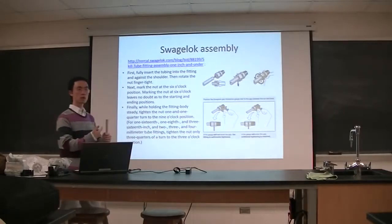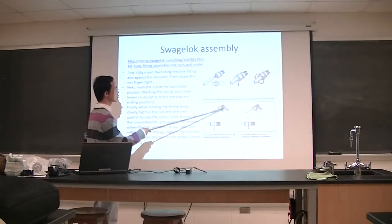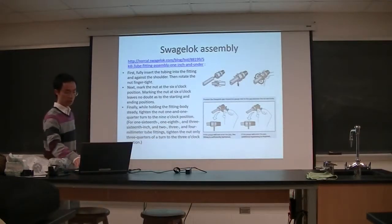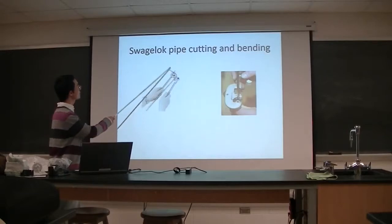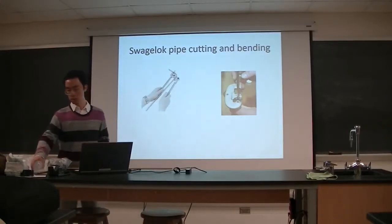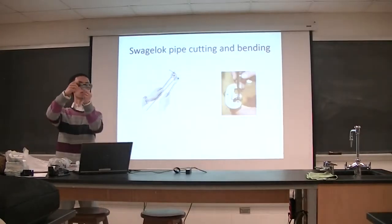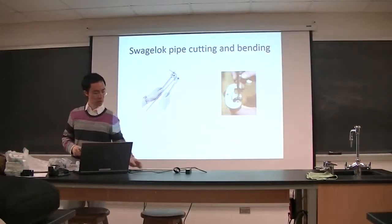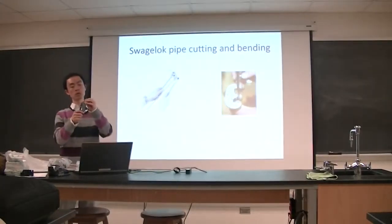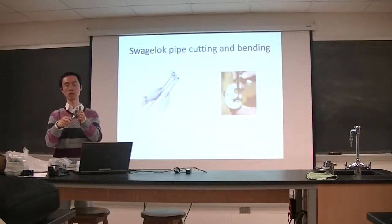You have special tools to bend and cut pipes. To cut: you have a rotating blade and a pressing part. Place your pipe in between, rotate it one full round, then tighten to apply pressure, and rotate again. After several rotations, the pipe is cut through.